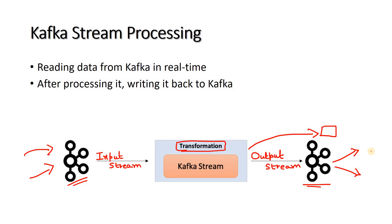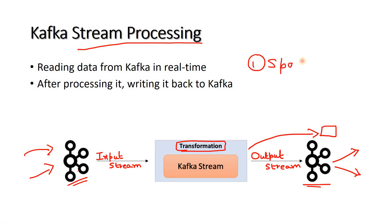From that output Kafka topic, using a consumer or Kafka sink connector, we can send the data to the external world. The data comes into the input topic in real time, and in real time this framework processes it and writes it to another topic — continuously applying the transformation on the input stream. That is what Kafka stream processing does.